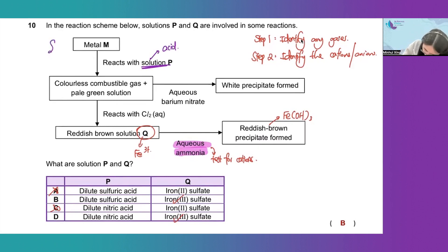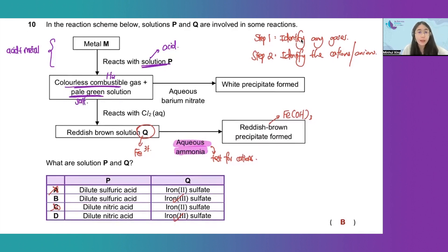This reaction between metal M and acid produces hydrogen gas, which is the colorless combustible gas, and pale green solution, which is the salt.